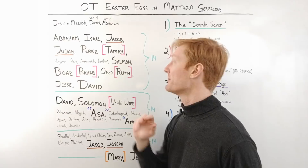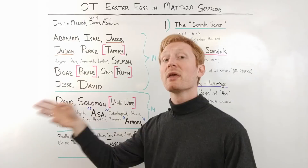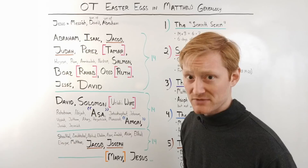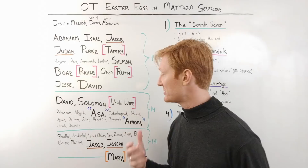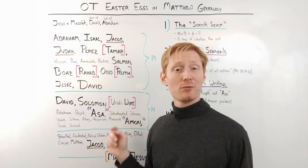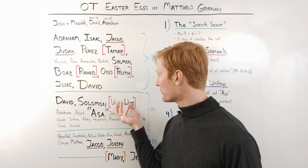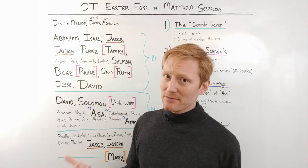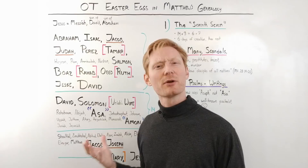Rahab was a Canaanite prostitute who helped Joshua when the Israelites were coming into the land of Canaan. She was one of the survivors of Jericho, that famous battle where the walls came tumbling down. You also have Ruth, who has a book of the Bible named after her and is mentioned in this genealogy. Then there's Uriah's wife — her name was Bathsheba, but Bathsheba isn't even mentioned by name. It brings in her husband's name because David killed her husband and slept with Bathsheba, and that's how we get King Solomon.